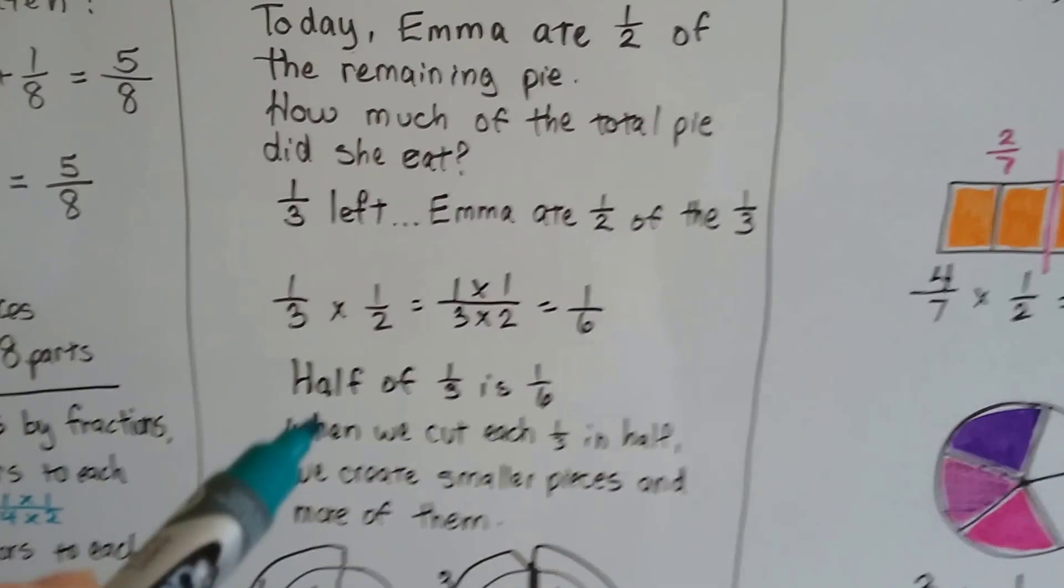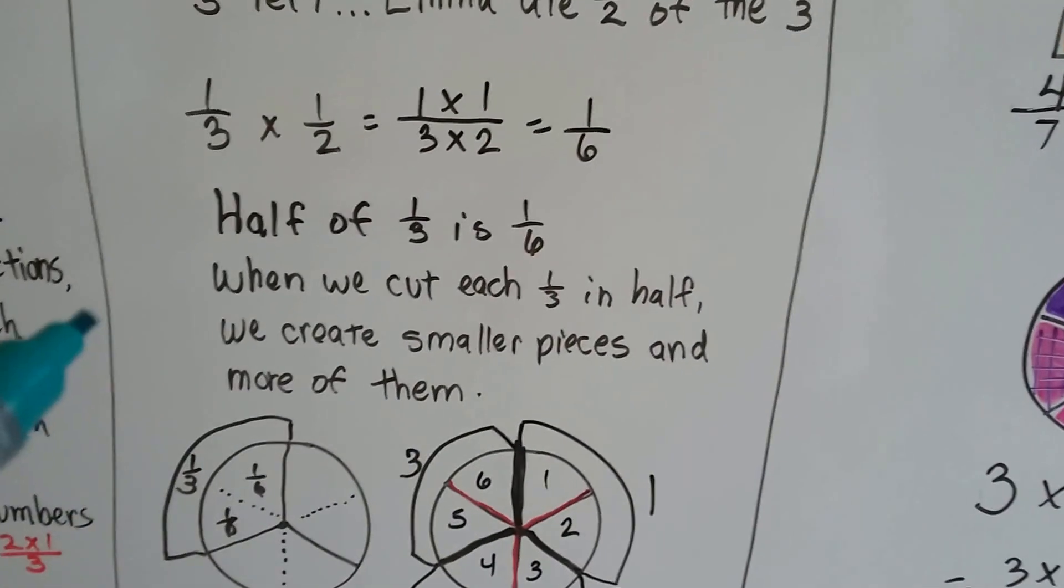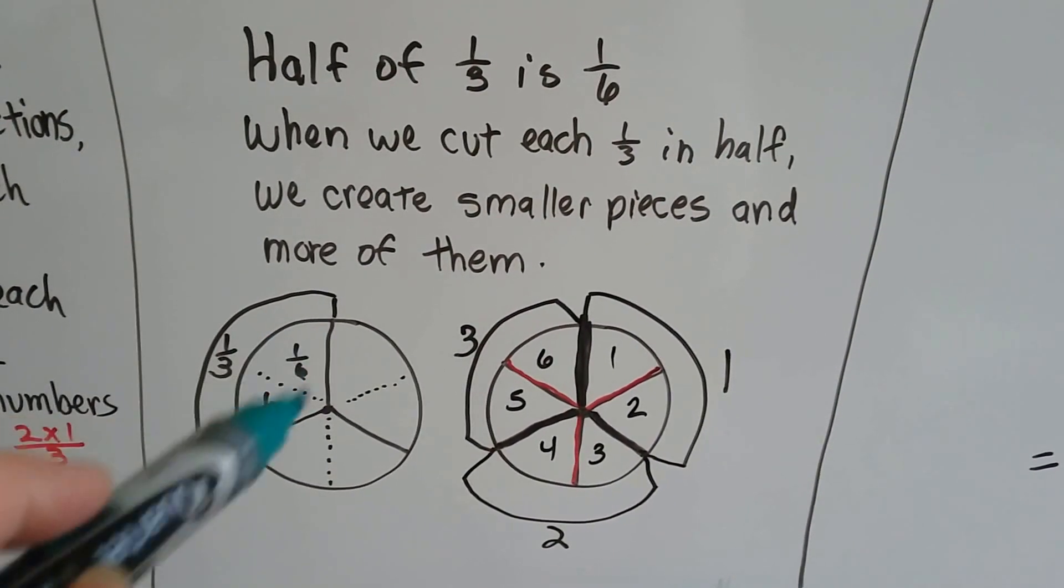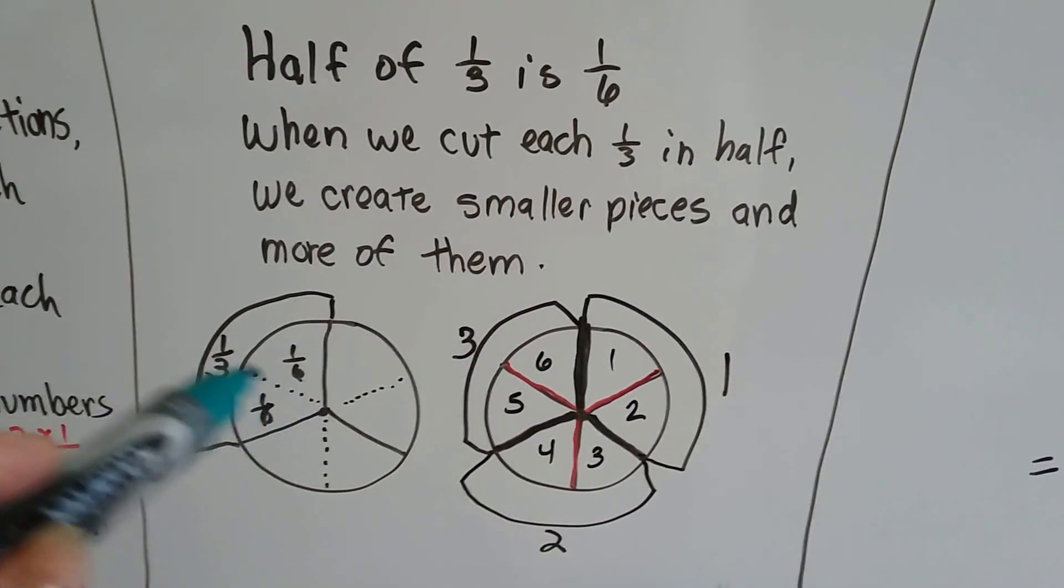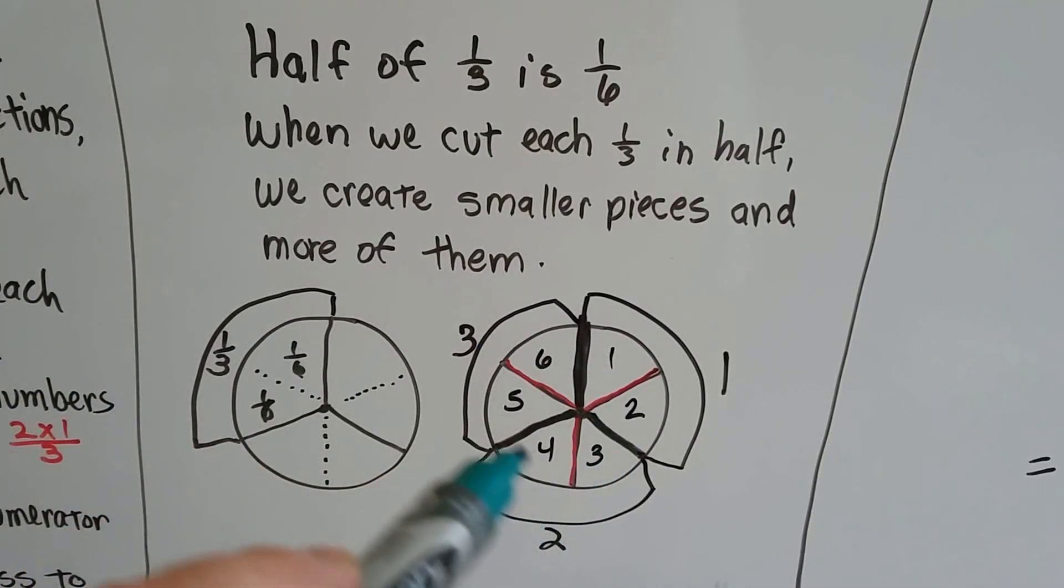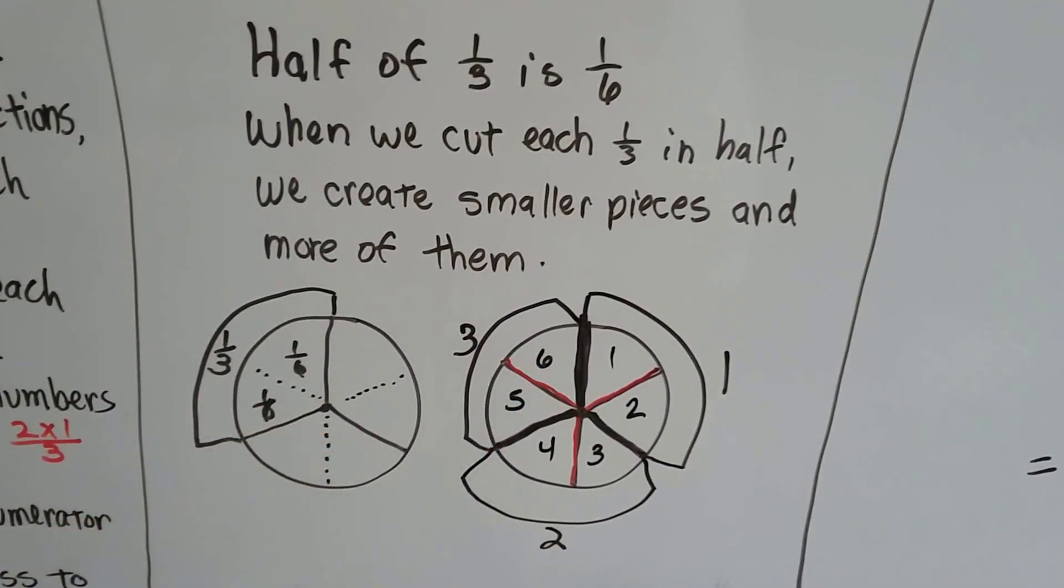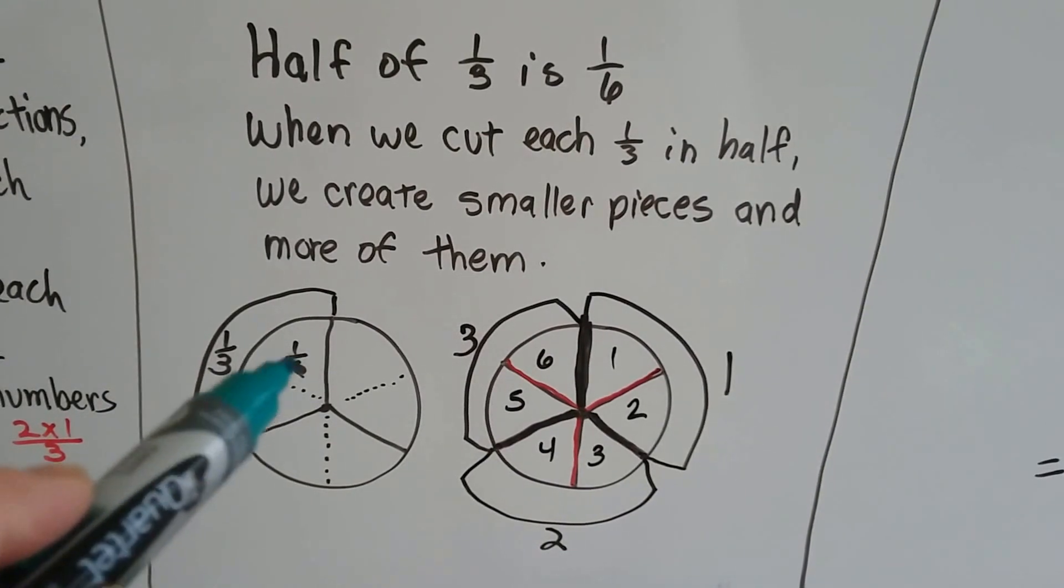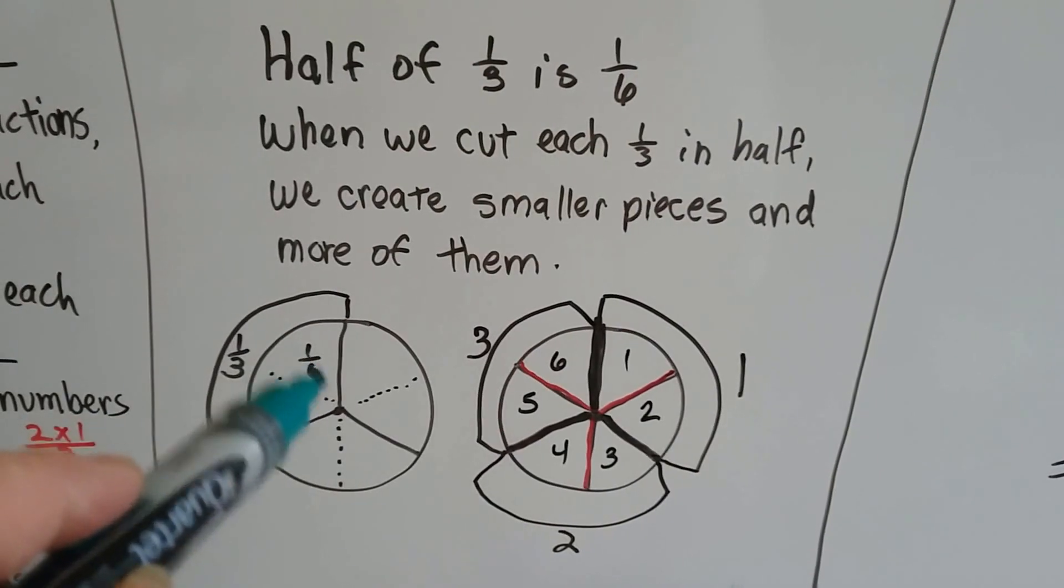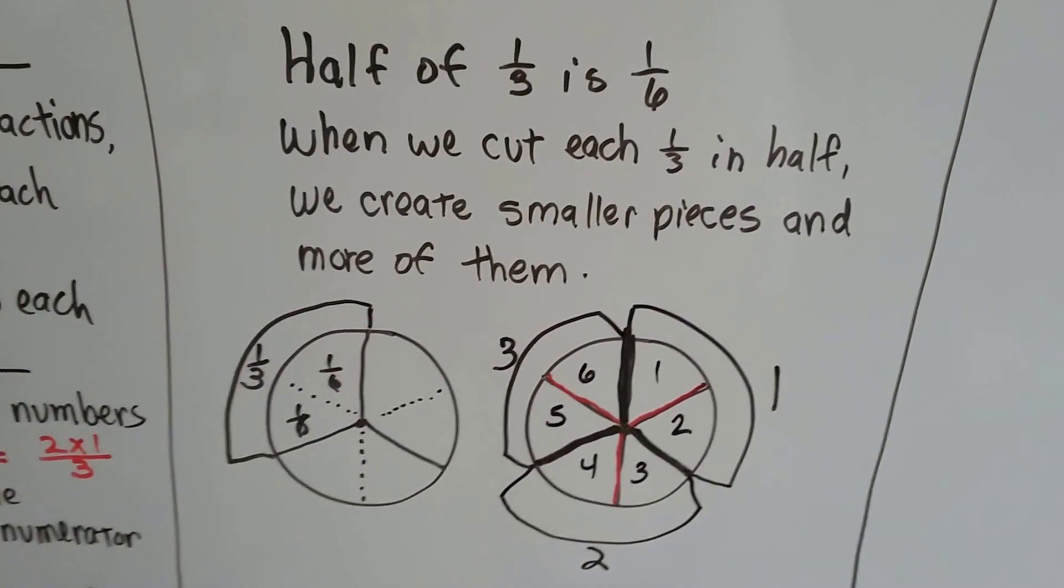Half of 1/3 is 1/6. When we cut each 1/3 in half, we create smaller pieces and more of them. Here's a third. If we cut it in half, it's now cut into sixths. If we cut each of these in half, they would be 12ths. If we cut each 12th in half, it would be 24ths. See how the denominator just doubles?